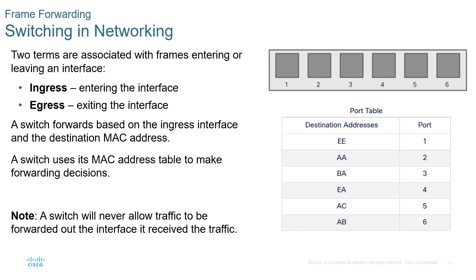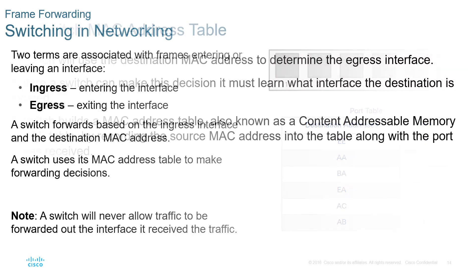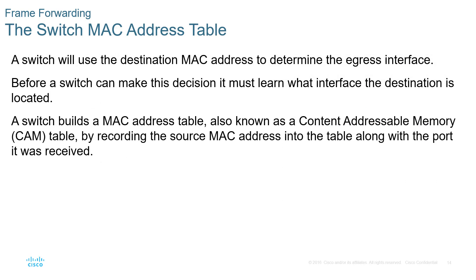A switch uses the MAC address table to make forwarding decisions. A switch will never forward traffic out the interface it was received on — so even with a broadcast, if a device plugged into port A sends a broadcast, the switch recognizes it was received on port 1 and sends it out all other ports except port 1. The MAC address table is stored in content-addressable memory, a CAM table. By recording source MAC addresses along with the port received on, the switch builds a map and learns where MAC addresses are located.